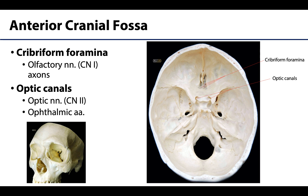In the anterior cranial fossa you are focusing on three bones: the frontal bone, the ethmoid, and the sphenoid bone. There is quite a bit happening in the ethmoid region and comparatively less in the others. There are very distinctive small foramina, the cribriform or sieve-like foramina, through which axons of the olfactory cells ascend from the nasal regions to form the olfactory nerves, which is cranial nerve one. These foramina surround the crista galli, which is the anterior attachment site for the falx cerebri.